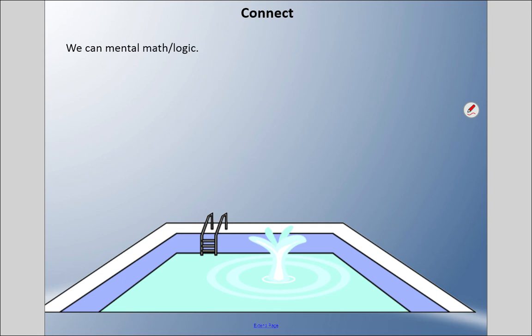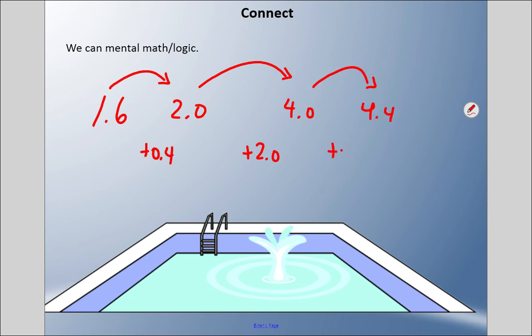We can use mental math and logic. If we start at the lower number, 1.6, we're going to try and jump to a whole number. I would add 4 tenths to make it 2. Now I need to get to 4.4, so I go to 4 by adding 2, then add 4 tenths. If I add these guys, I have 2.8 kilometers.